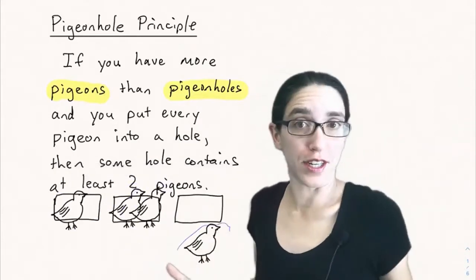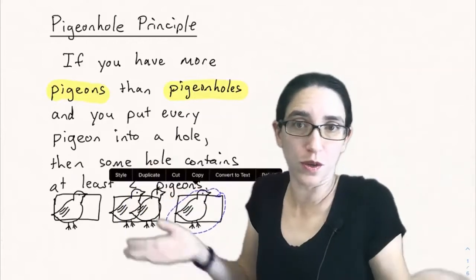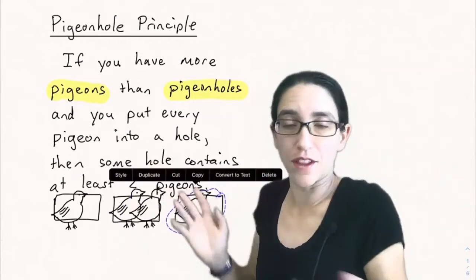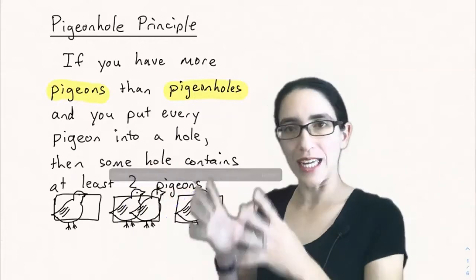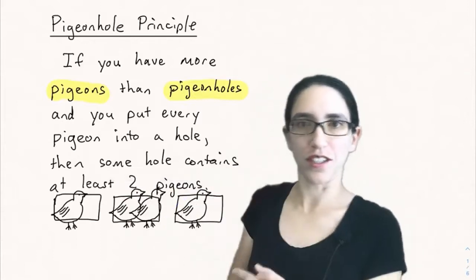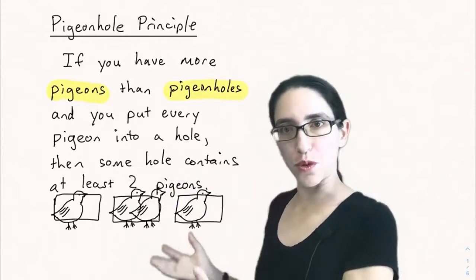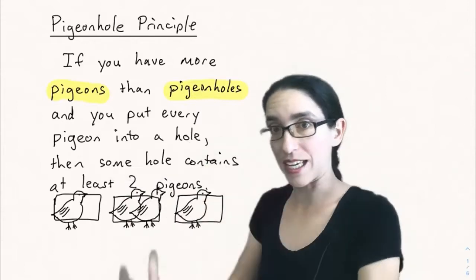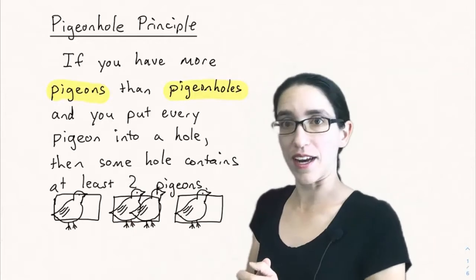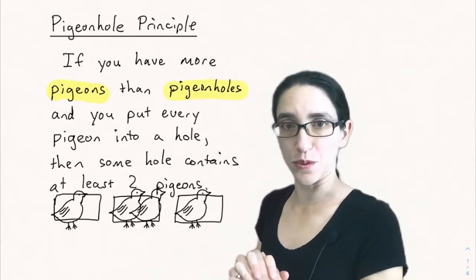Maybe three pigeons share a hole — I could put all four pigeons into one hole and none in the others, for instance — but some hole has at least two pigeons. This is an extremely important principle for showing that something exists in mathematics, and it has a lot of applications as we'll see today.